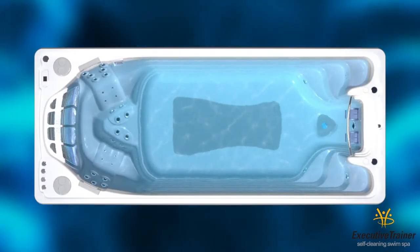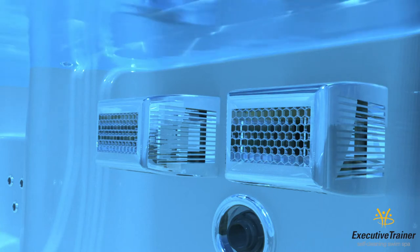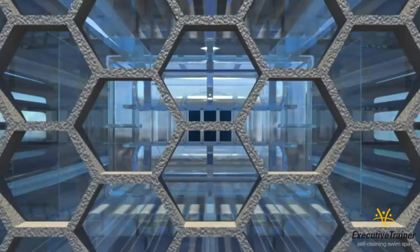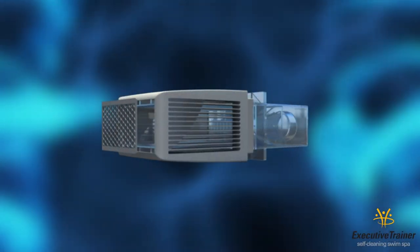The widest and deepest swim area in the industry is the first part of the Executive Trainer Swim System. The combination of powerful pumps and the patented V-twin jets delivers a large volume of water to the swim area. Each V-twin jet produces over 640 gallons of water per minute.